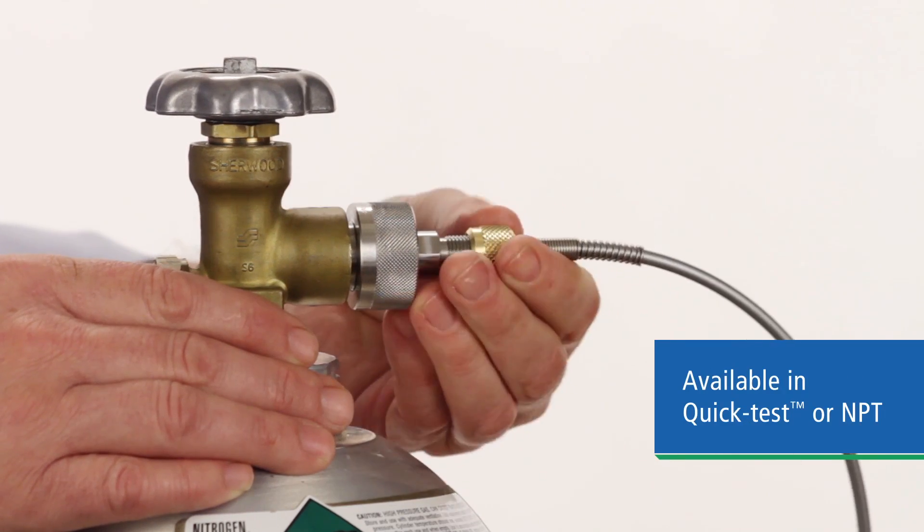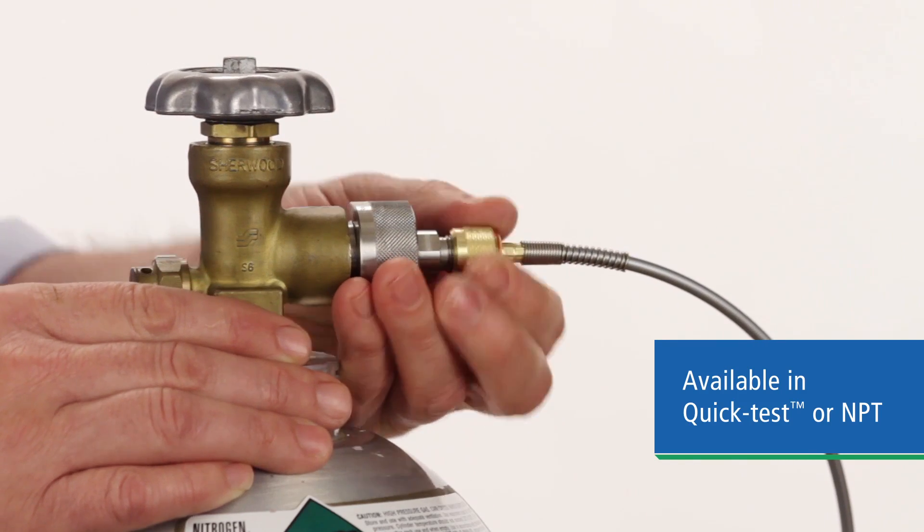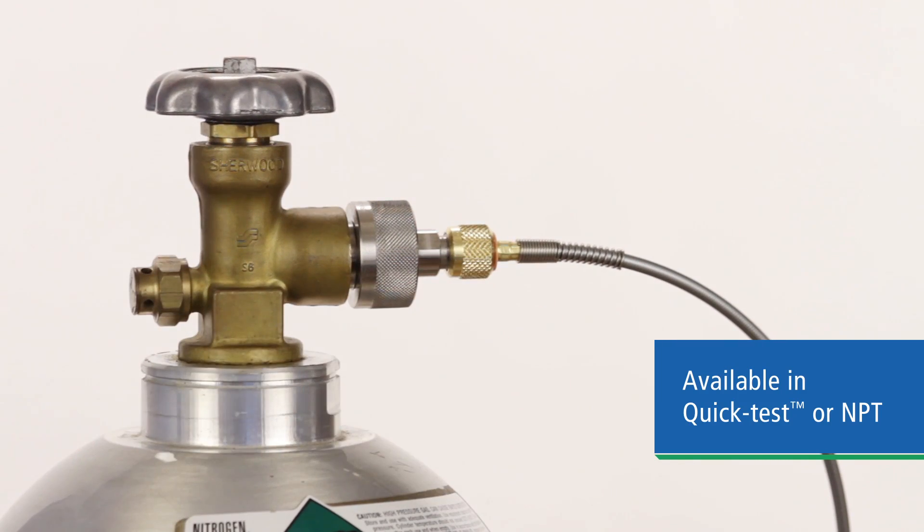On the outlet side you have a choice of our Ralston quick test fitting for no tool hose connection or a standard quarter inch male NPT thread depending on your application.